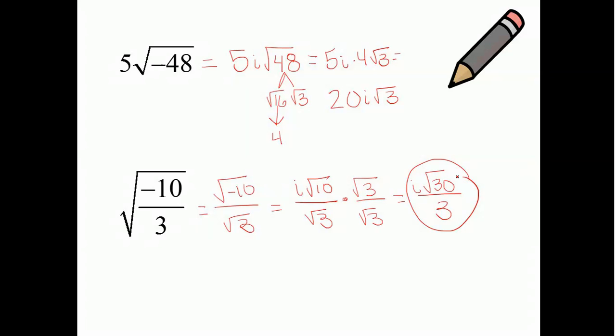Because the square root of 30, 4 doesn't go in, 16, 25, none of the perfect squares go underneath it. So, I can just leave it as that.